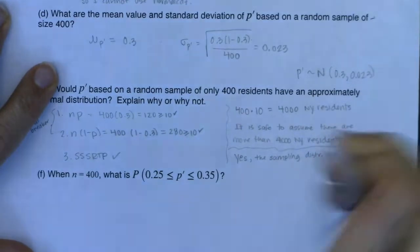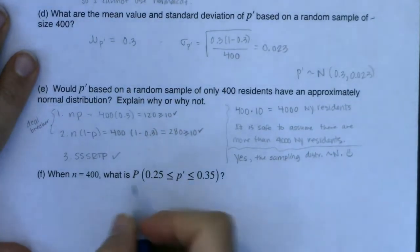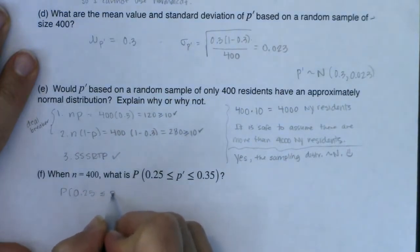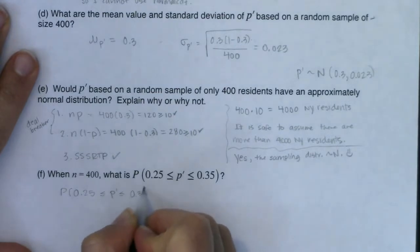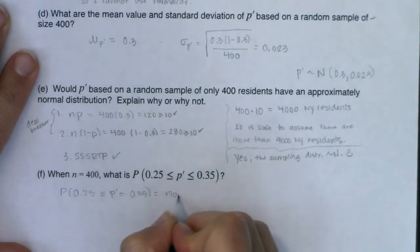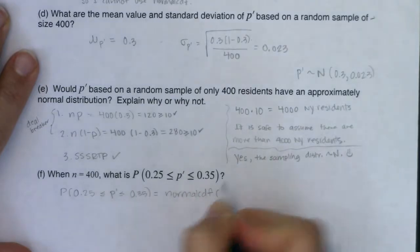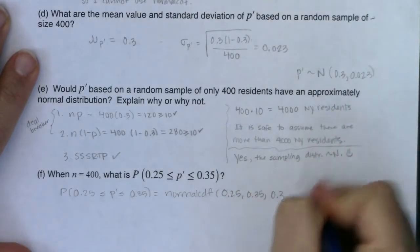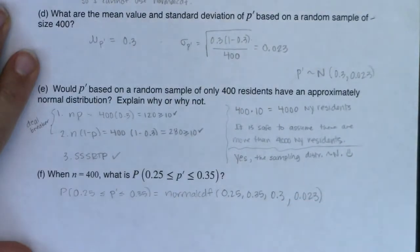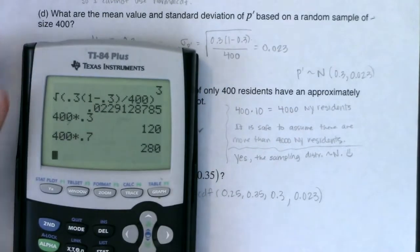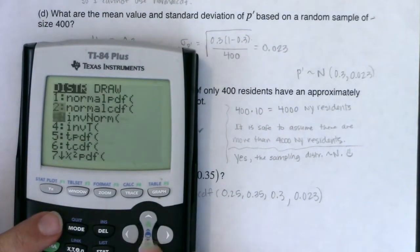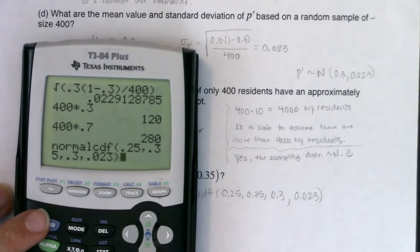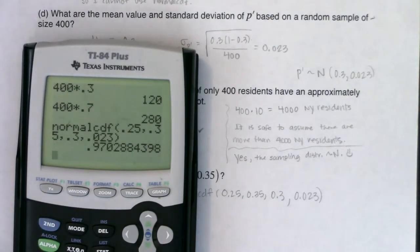Now we can do part (f). If I sample 400 residents, what's the probability that between 25% and 35% live near a hazardous waste site? We use normalCDF with low = 0.25, high = 0.35, mean = 0.3, and standard error = 0.023.